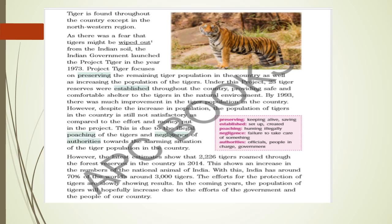As there was a fear that tigers might be wiped out — that is, finished and vanished from Indian soil — the Indian government launched Project Tiger in the year 1973. The project focuses on preserving the remaining tiger population in the country as well as increasing that population.